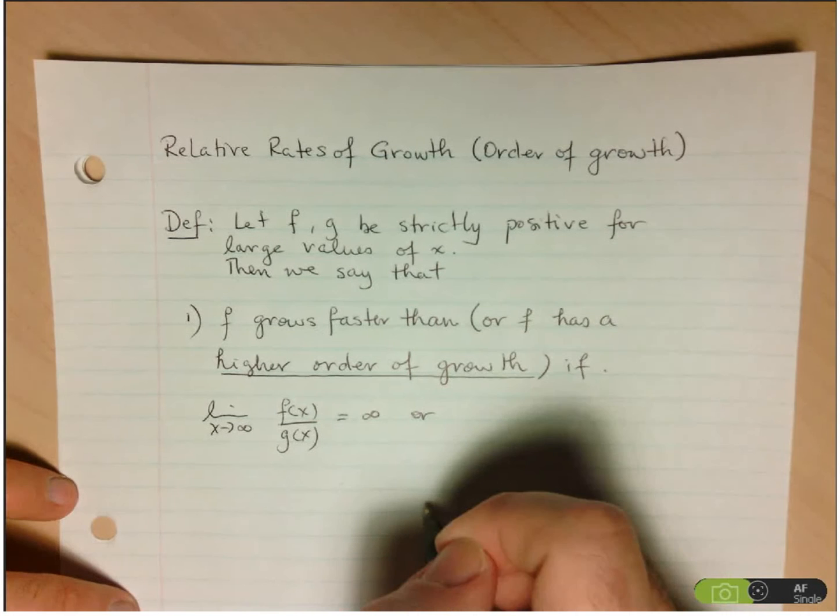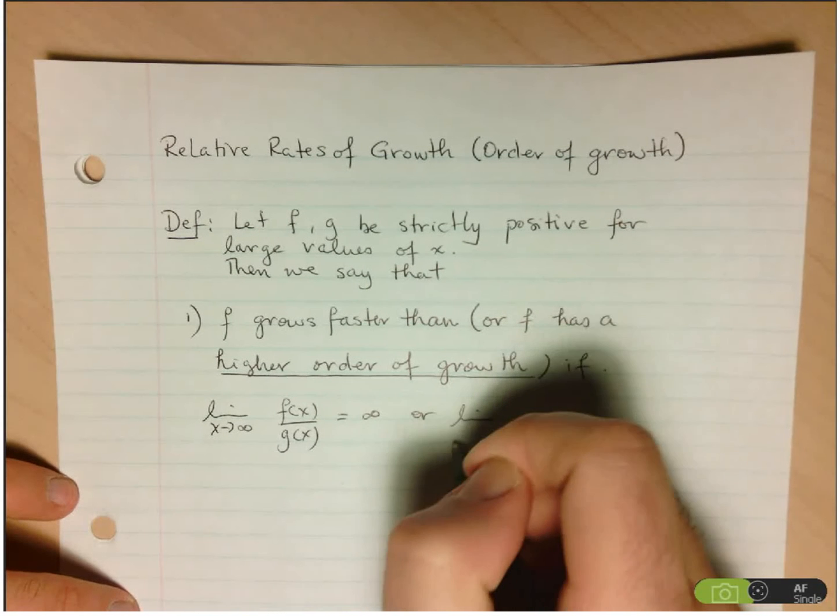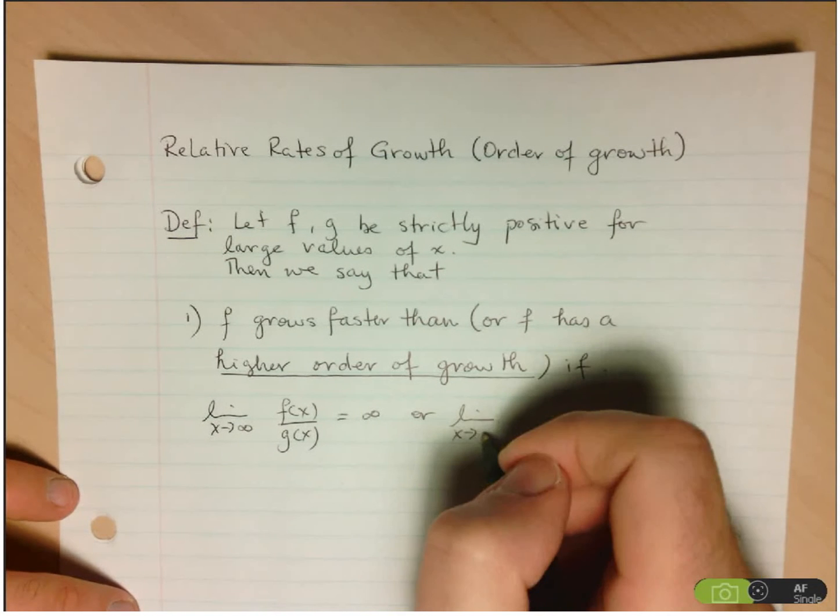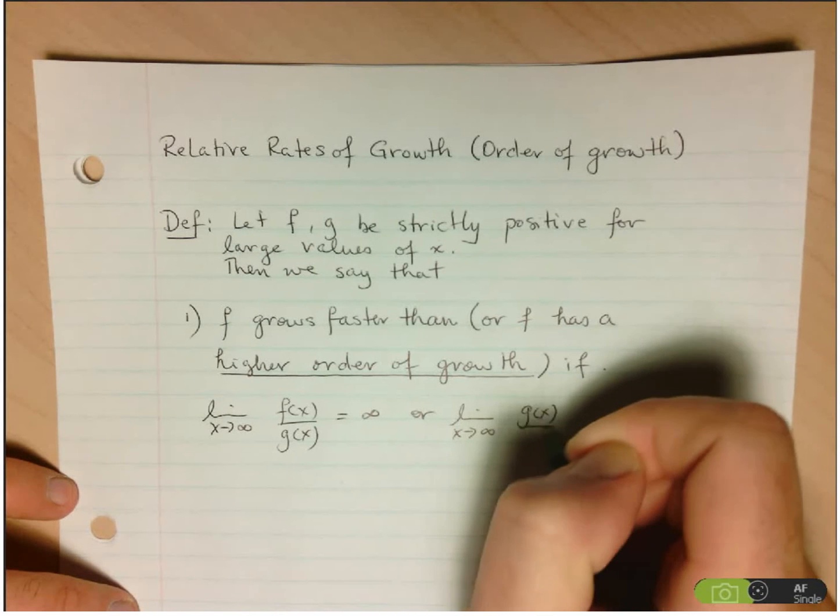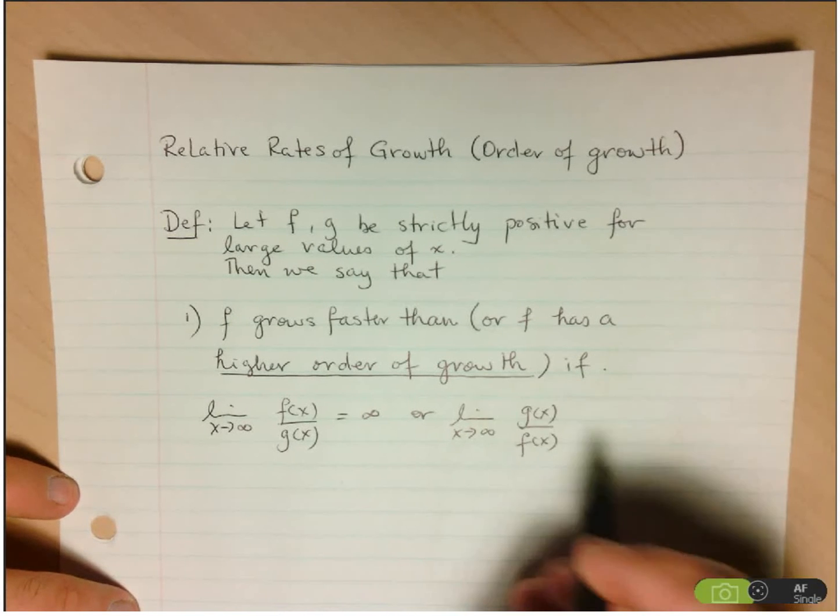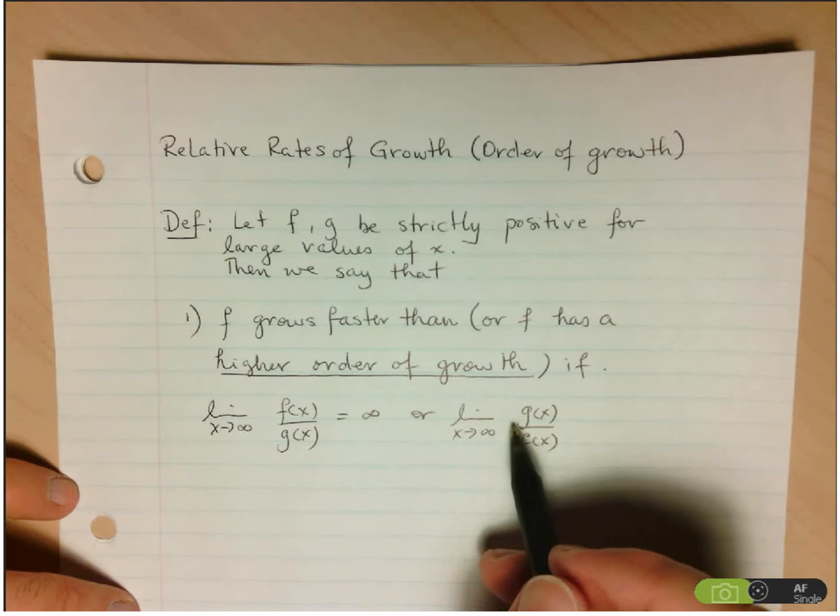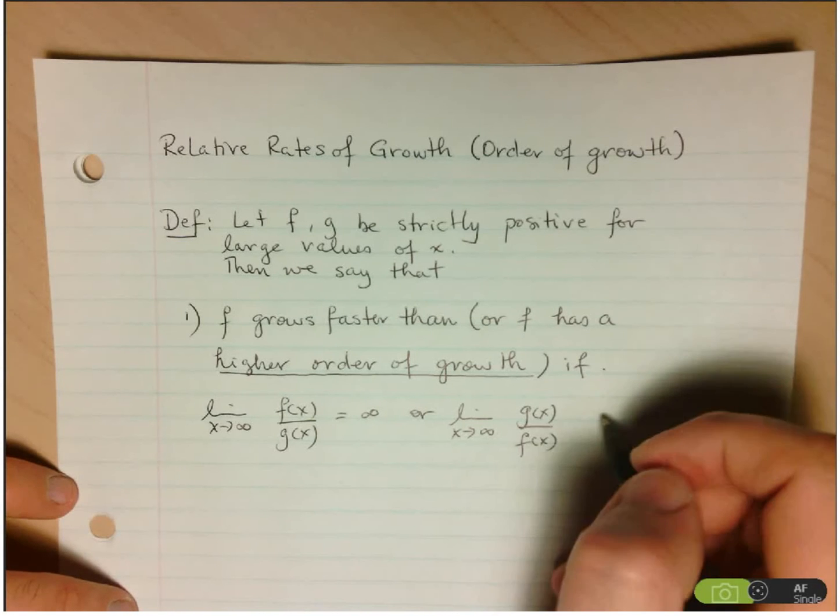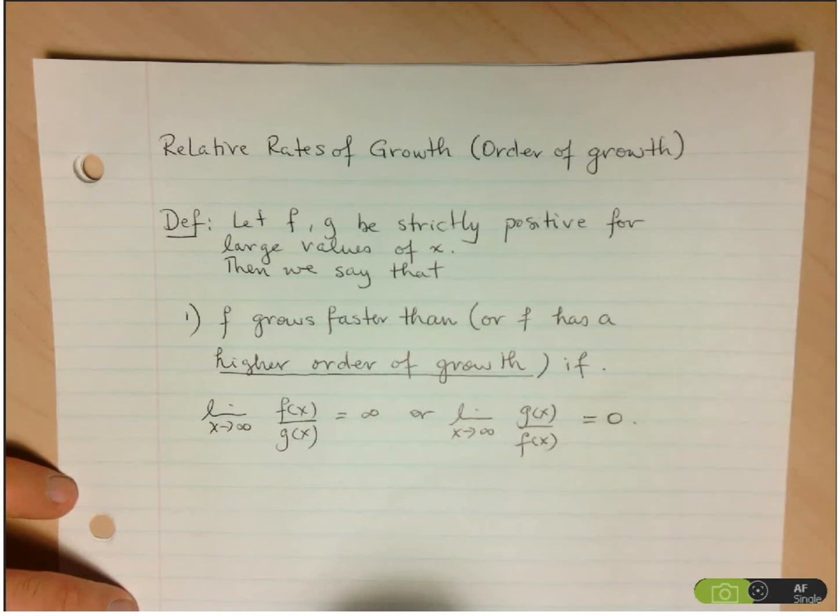Or, alternatively, you can compare the ratio of g at x over f at x. And again, if g at x is to become insignificant over time, then that limit should be equal to zero.